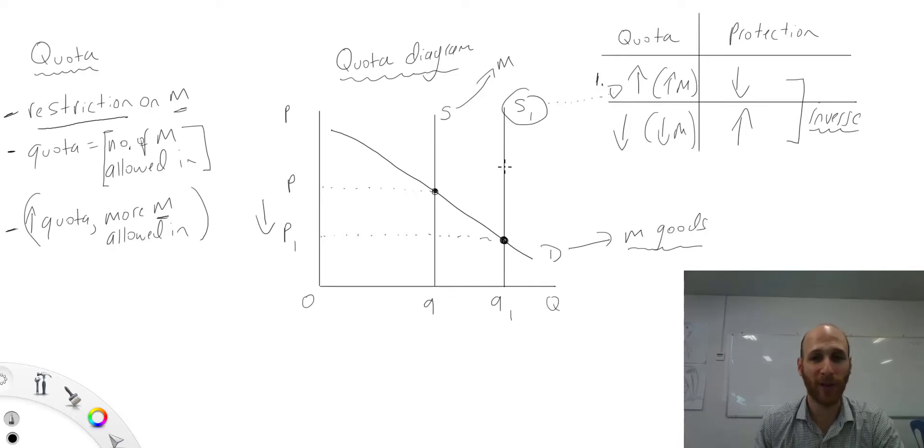Now there's also the other situation, which we'll call situation number two. Situation number two is where the government will reduce the quota, Q2, so we're moving this way or this way. So with S2, can you see that S2 now intersects with the demand curve at a higher point? So that's P2.